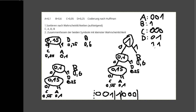Wer den Huffman-Baum-Algorithmus korrekt durchführt, bekommt automatisch einen Code der die Fano-Bedingung erfüllt. Dadurch ist es möglich, eine Bitkette mit variablen Bitbreiten eindeutig zu entschlüsseln, wenn man weiß, wo der Start ist.